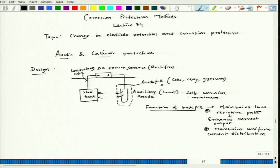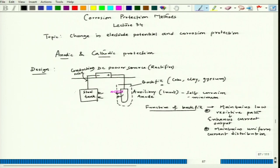Uniform current distribution is important because in a local zone of very low resistivity, current would preferentially flow through that part only. Then the total current needed for sufficient protection of the steel tank may not be met. So everywhere around that particular anode, the path resistance should be as uniform as possible. This is especially problematic in the case of sacrificial anode, which we will discuss later.